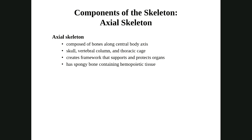The axial skeleton is along the body's central axis: skull, vertebral column, and thoracic cage — which includes the ribs and sternum. A couple of functions of the skeleton: one is protection — your ribs protect your lungs, heart, and organs in your chest. Another function is that it's a storage site for calcium, phosphorus, and so on. It's also a site where hematopoiesis occurs — the creation of the blood elements: white blood cells, platelets, and red blood cells.